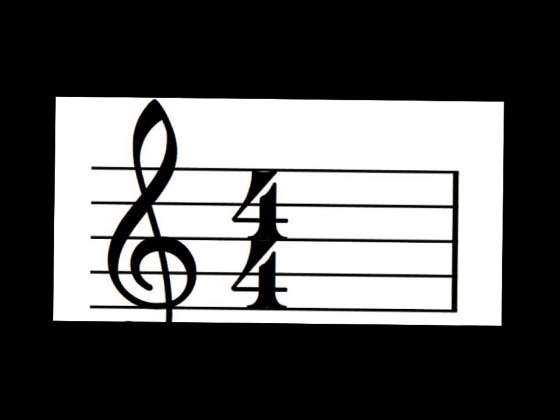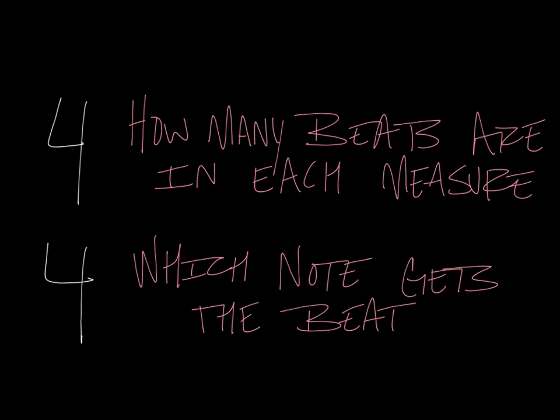All right guys, today's mini lesson is going to be on time signatures. A time signature can only be found in the upper left-hand corner of your music where your music begins. You'll normally find it sitting right next to the clef. In this case, we have a treble clef. You'll also find that sitting next to the key signature if there is one, and then right next to that you will find your time signature.